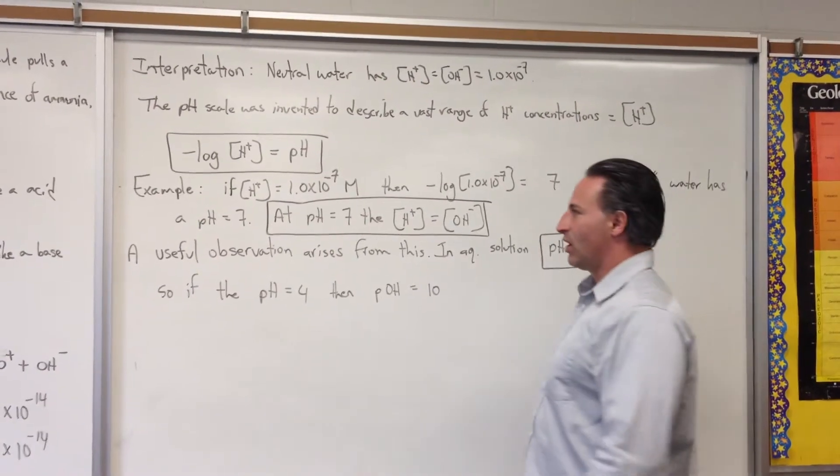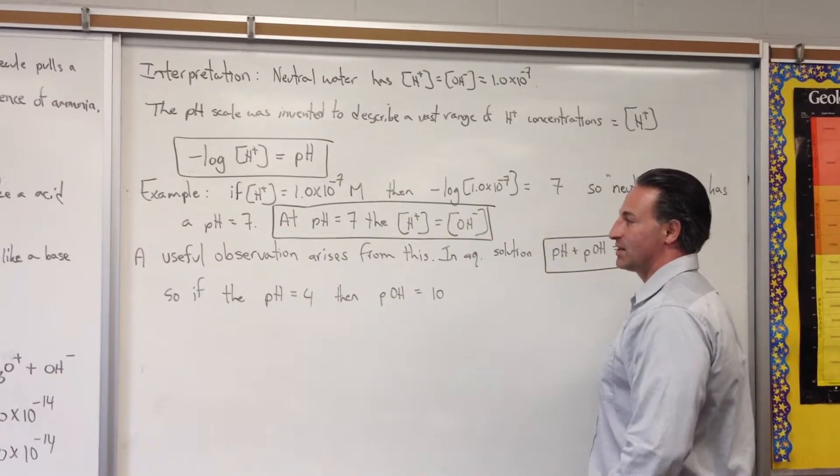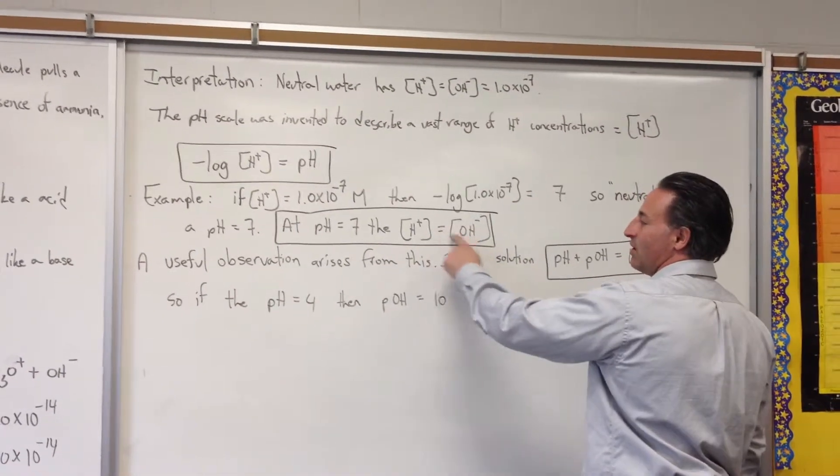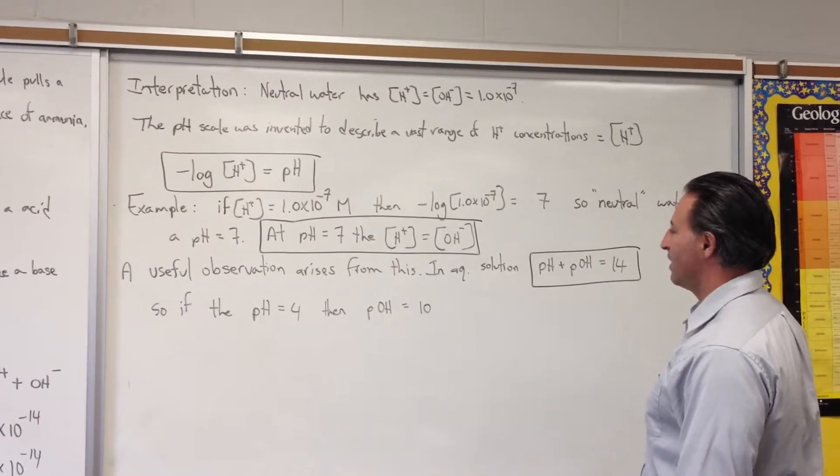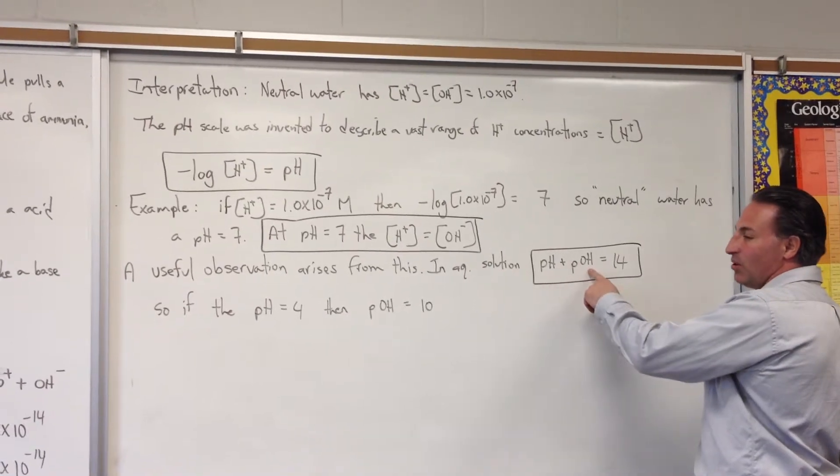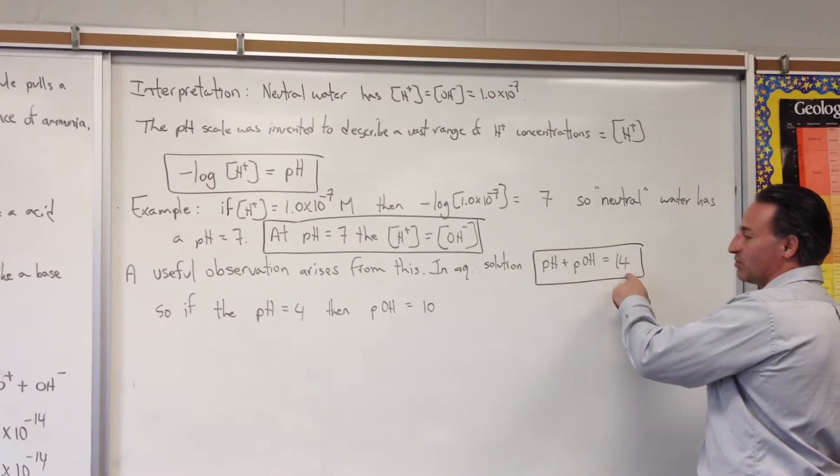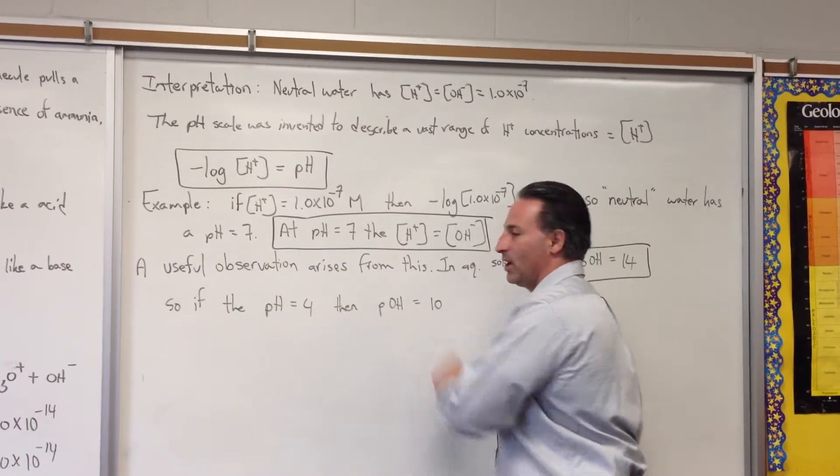Neutral water will also have a concentration of hydroxide ions that equals 1.0×10^-7. At pH equals 7, the hydroxide and hydronium concentrations are the same, from which we observed that the pH plus the pOH of pure water always equals 14. For example, if the pH equals 4, then the pOH has to equal 10.